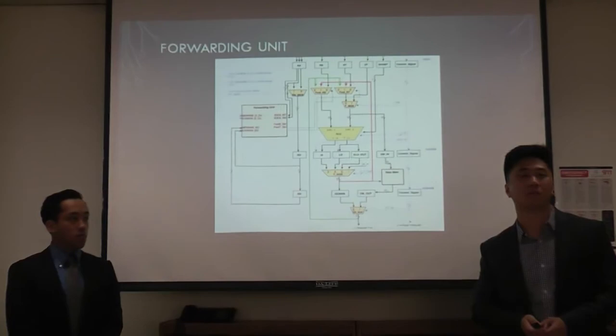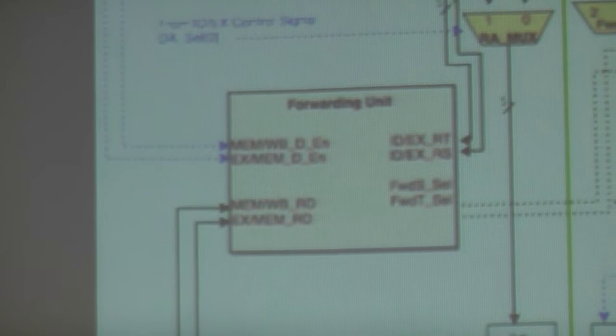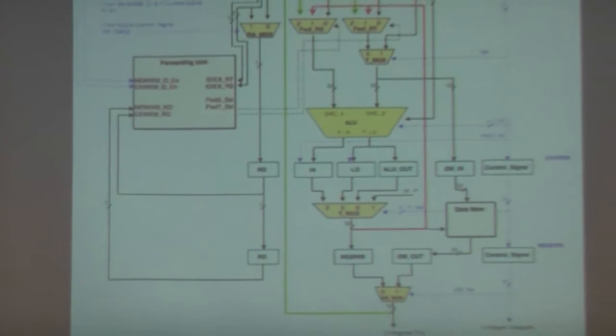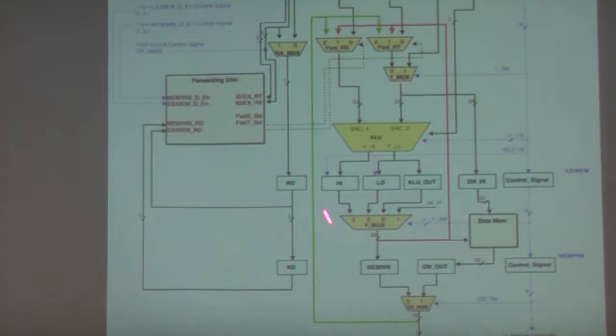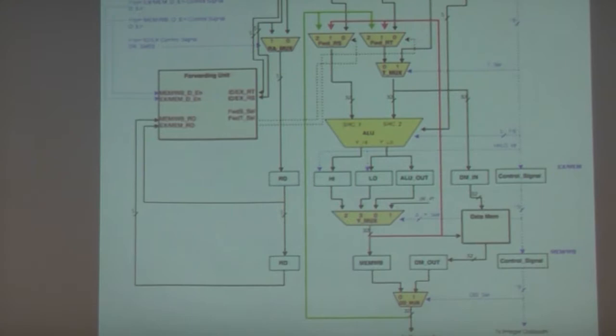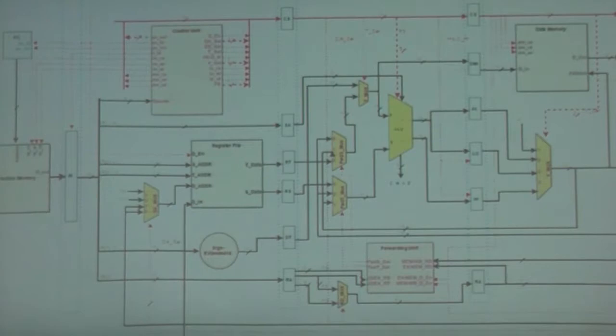Visually, the forwarding logic shows the RT forwarding unit. If the memory-writeback RD matches the IDEX RS, it takes the first green path. If the EXMEM and IDEX match instead, it takes the second green path. This same logic applies symmetrically for both RS and RT forwarding.